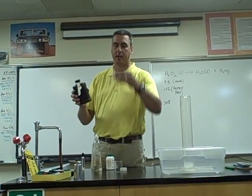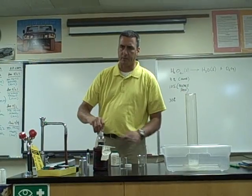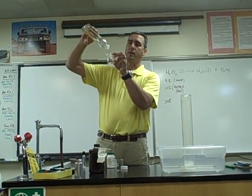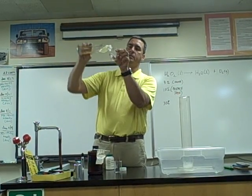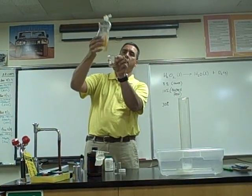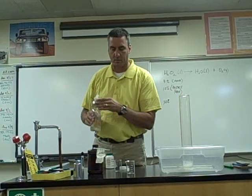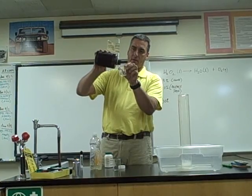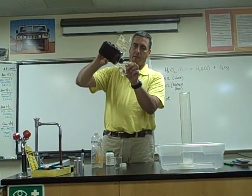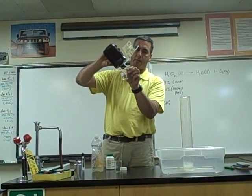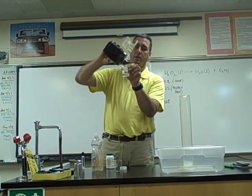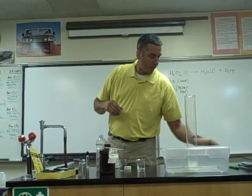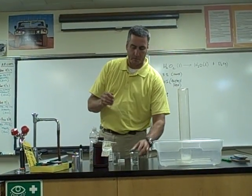I'll take some of the 30% peroxide and put a few drops of dishwashing soap in here. We really won't use too much, just a little bit. That's plenty — more than your moms would ever use at home. We'll put maybe 15 or 20 milliliters of peroxide. We don't have very much of this left, so you guys are probably going to be the last class to see this today. We'll stir this baby up with a stirring rod.